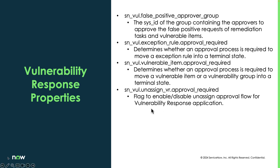The next one: if you want to require the approval flow to run when you're going to unassign a vulnerable item record, you can enable or disable that flow for that. So that would be like if it came into the wrong assignment group and somebody wanted to assign it and kick it back to the vulnerability response team so they could take a look at the assignment rules and see if something needs to be adjusted or revised.